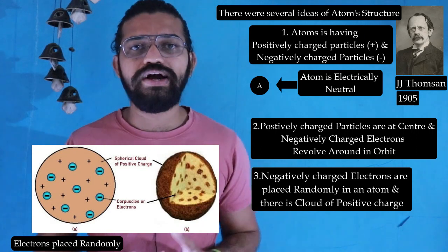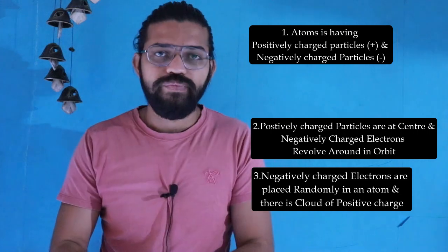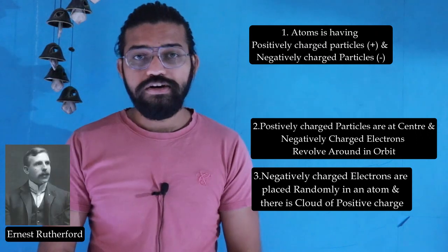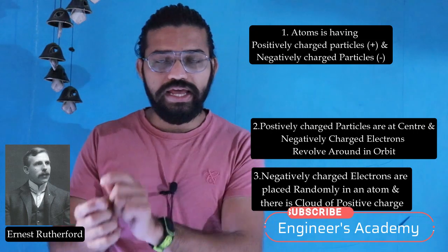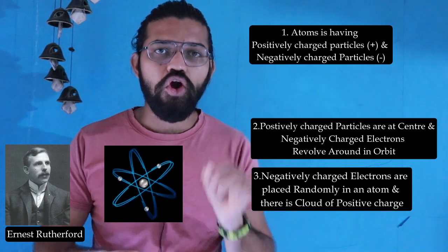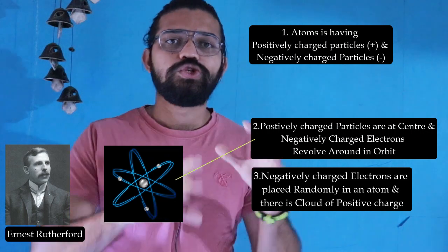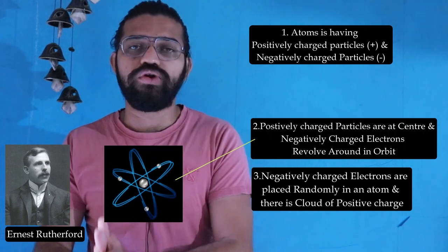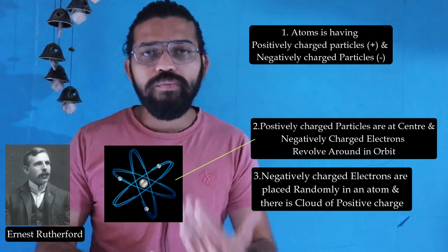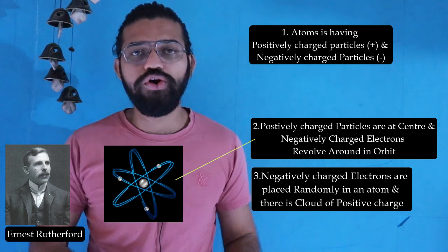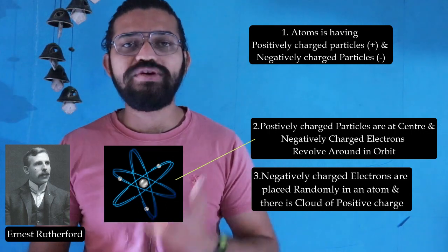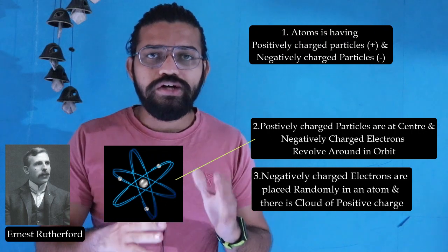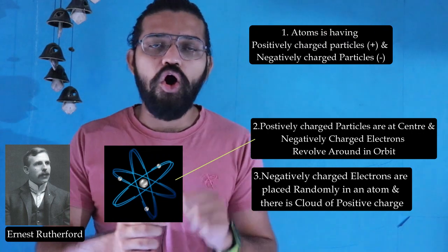JJ Thomson followed this third model, but his student Ernest Rutherford later discovered that the atomic structure has a nucleus at the center and electrons revolving in certain orbits around the nucleus. That is the next proposed model by Ernest Rutherford, and he derived the atomic structure. From this video onwards we will learn the atomic structure in depth — how atoms consist of electrons and how they are placed around the nucleus.